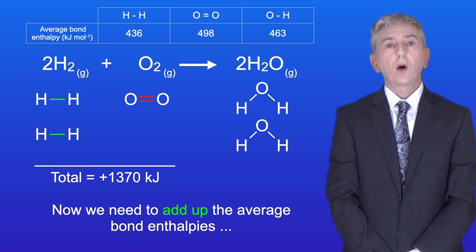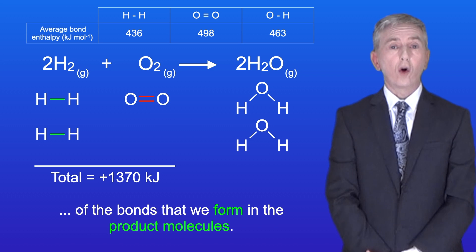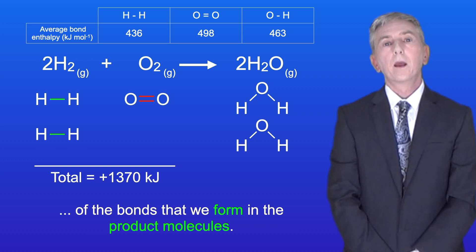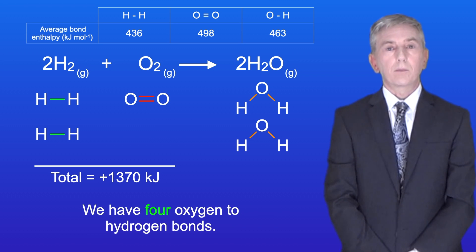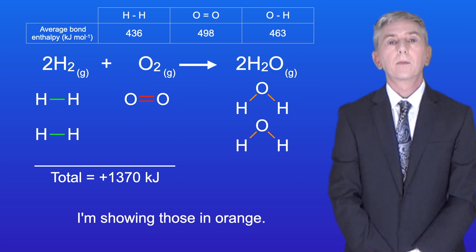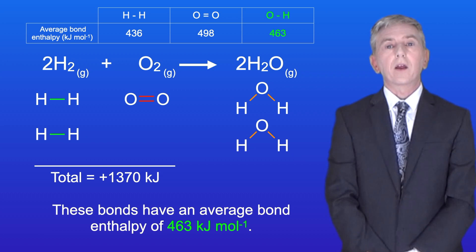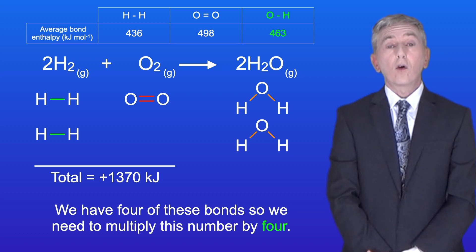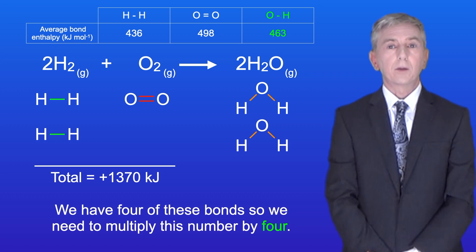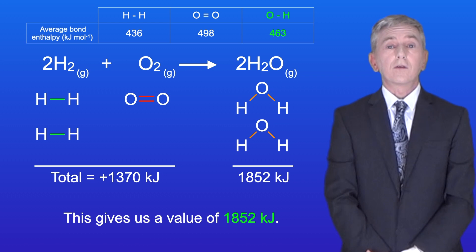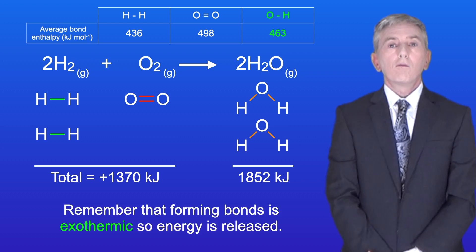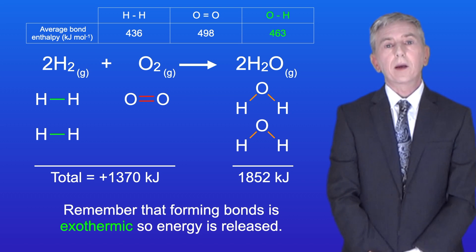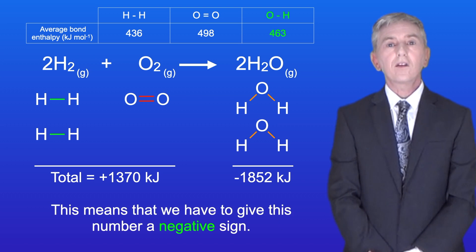Now we need to add up the average bond enthalpies of the bonds that we form in the product molecules. We've got four oxygen to hydrogen bonds, shown in orange, with an average bond enthalpy of 463 kilojoules per mole. We've got four of these bonds, so we multiply by four, giving us 1852 kilojoules. Forming bonds is exothermic so energy is released, meaning we give this number a negative sign.